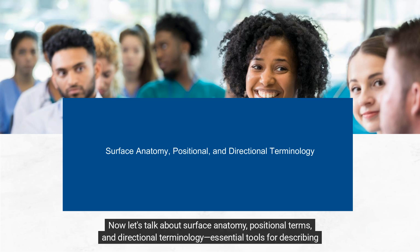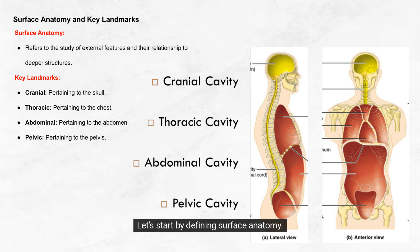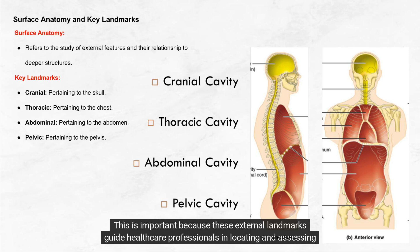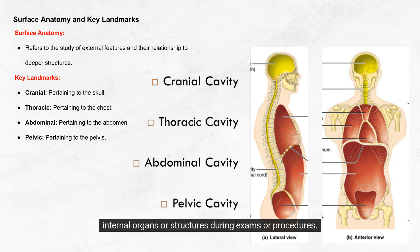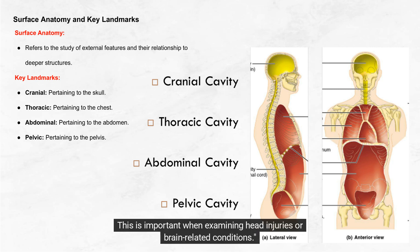Now let's talk about surface anatomy, positional terms, and directional terminology — essential tools for describing the human body in medicine. Surface anatomy involves studying the external features of the body and their relationship to deeper structures. This is important because these external landmarks guide healthcare professionals in locating and assessing internal organs or structures during exams or procedures. Some of the key landmarks include cranial, which pertains to the skull — important when examining head injuries or brain-related conditions.